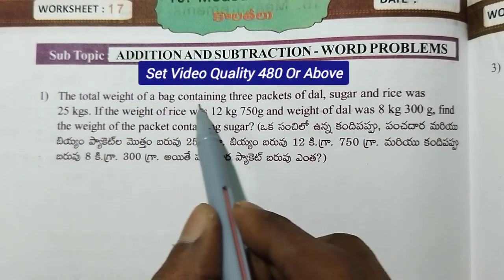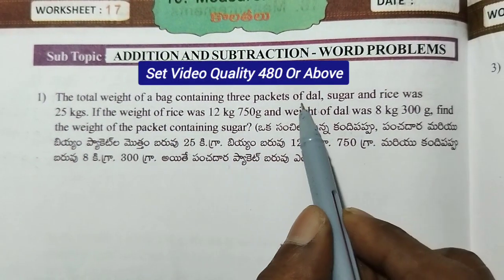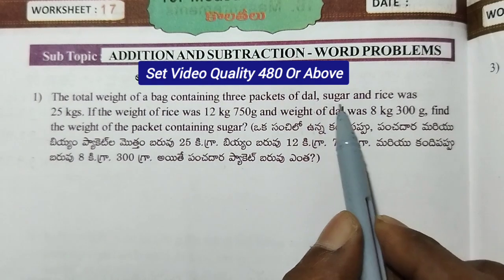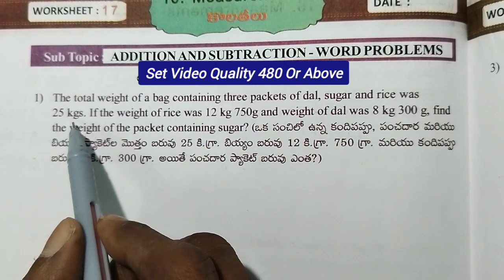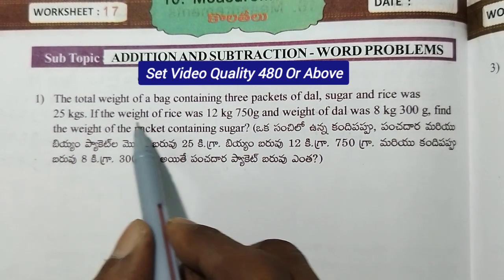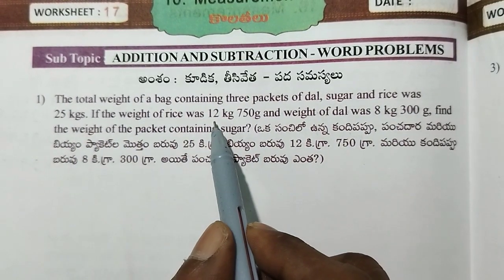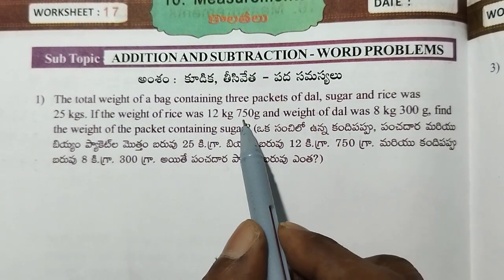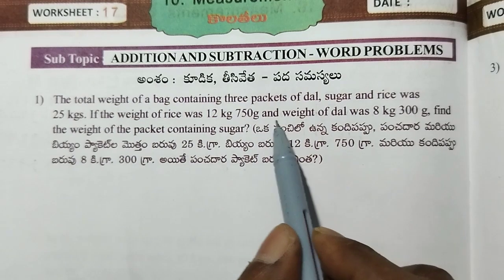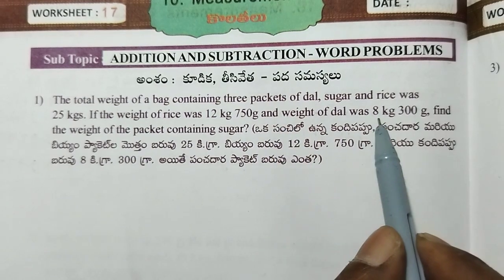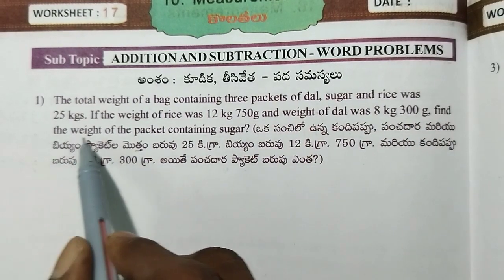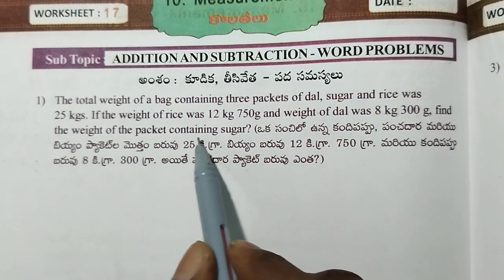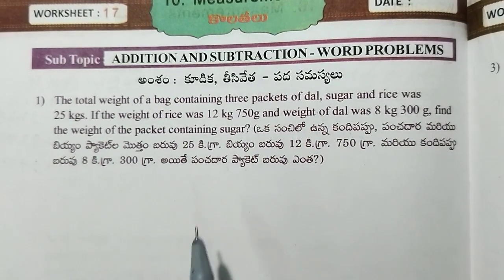The total weight of the bag containing 3 packets of dal, sugar, and rice was 25 kg. If the weight of rice was 12 kg 750 grams and weight of dal was 8 kg 300 grams, find the weight of the packet containing sugar.